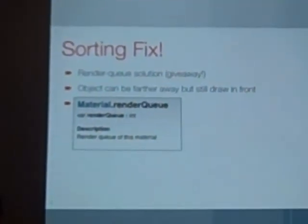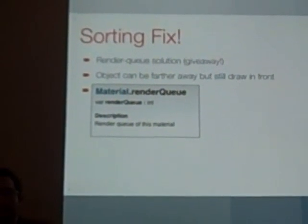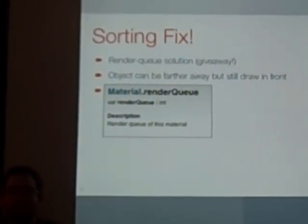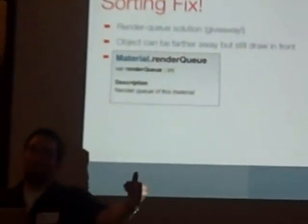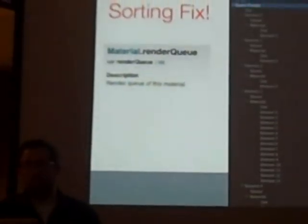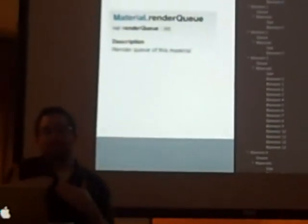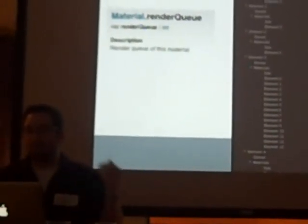The sorting fix is to use material.renderQueue. We created an editor script where we can create queue groups — for example, clouds exist at layer 3,000 (the default renderQueue value), and we want rocks to exist in front of them, so we set that to 3,020. Using these numbers, we can manually force renderQueues, which is how we get away from the issue of things popping behind or in front — you're just forcing the values based on numbers.